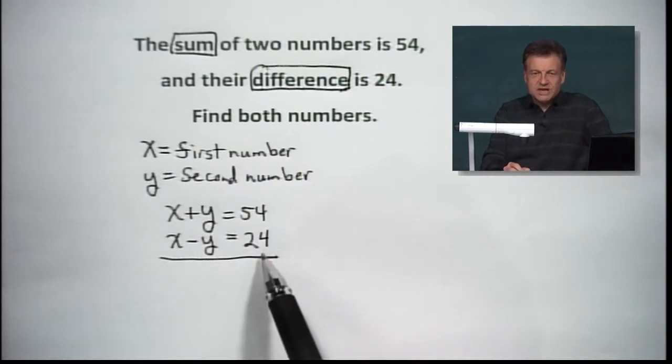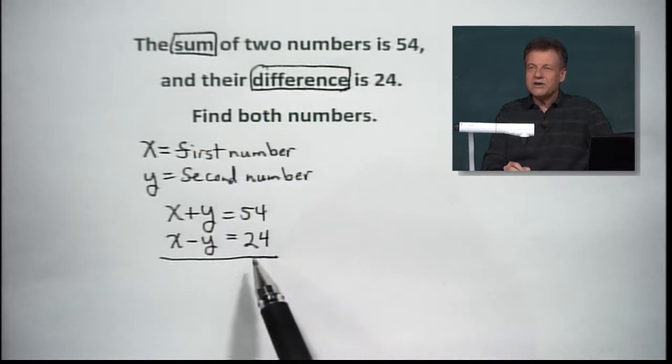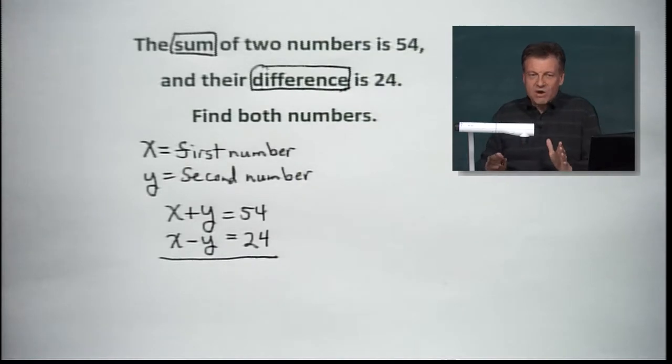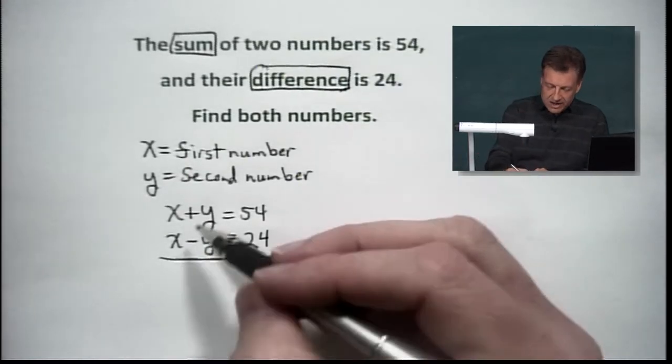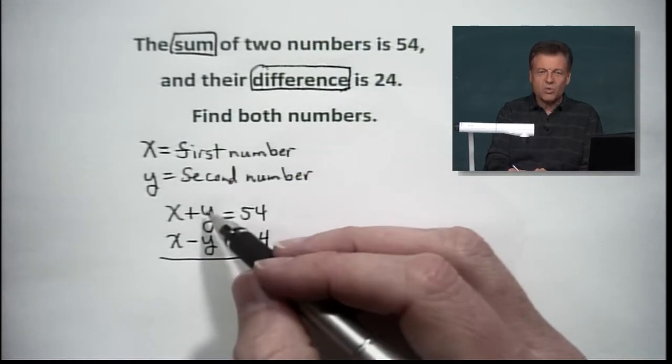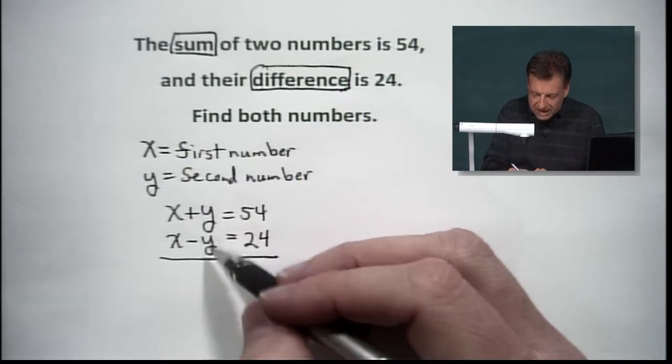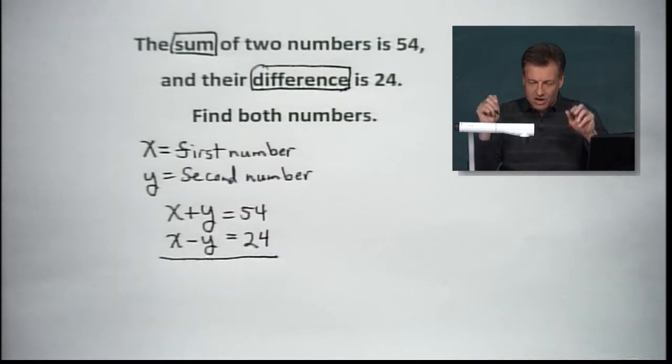I drew a line underneath the thing. Why did I do that? Well, because I want to eliminate. I want to eliminate a variable. And boy, our Y's are just itching to go away. You see why? Because I've got a Y and a minus Y. Say goodbye to those.